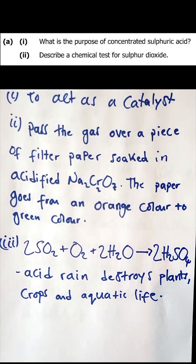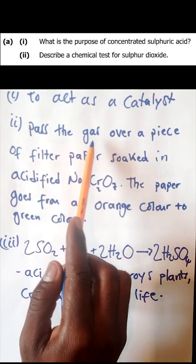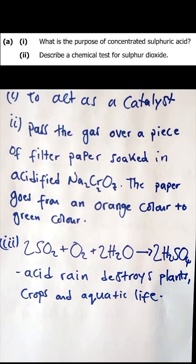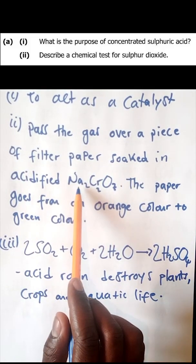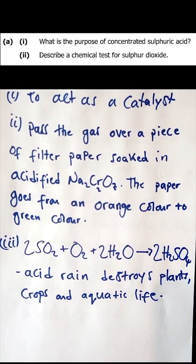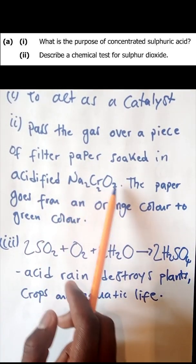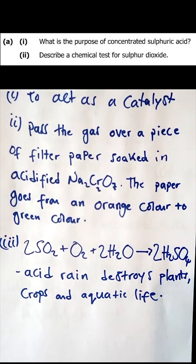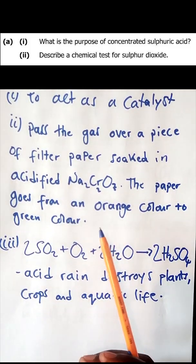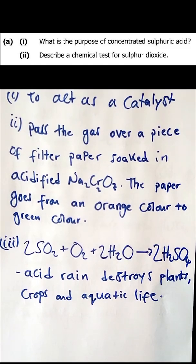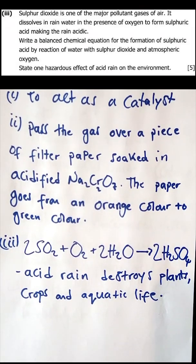Question 2: describe a chemical test for sulfur dioxide. To test for sulfur dioxide, you pass the gas over a piece of filter paper soaked in acidified sodium chromate. If the gas contains sulfur dioxide, the paper will change color from orange to green. That color change confirms you have sulfur dioxide.